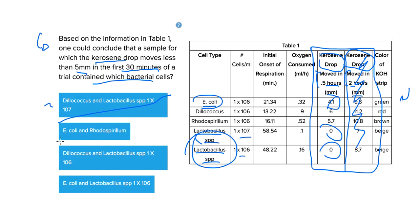E. coli and Rhodospirillum, no. E. coli, yes, but the Rhodospirillum was greater than five. Dilococcus again, no. E. coli, yes, that was less than five, and Lactobacillus 10^6, yes, that was zero, also less than five.